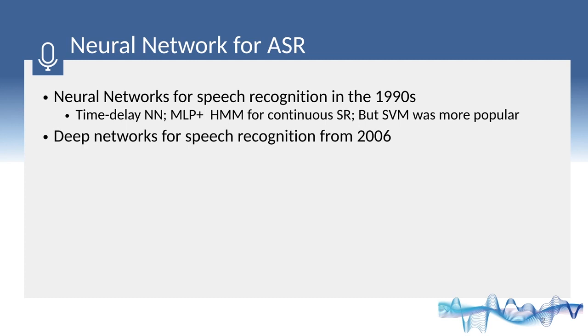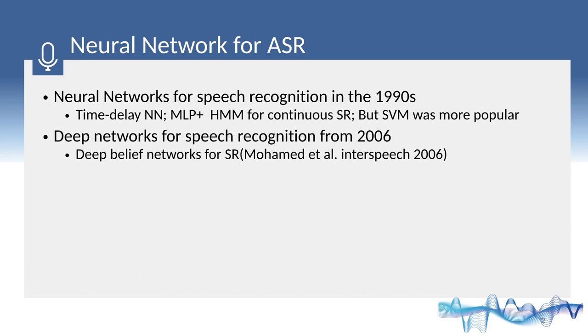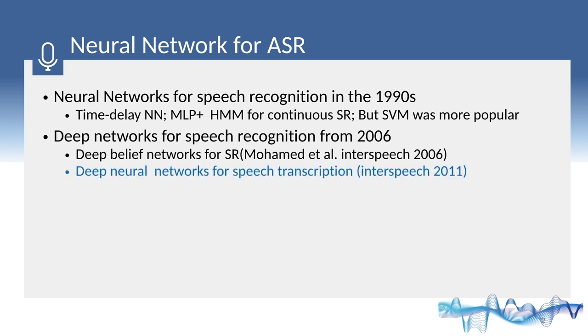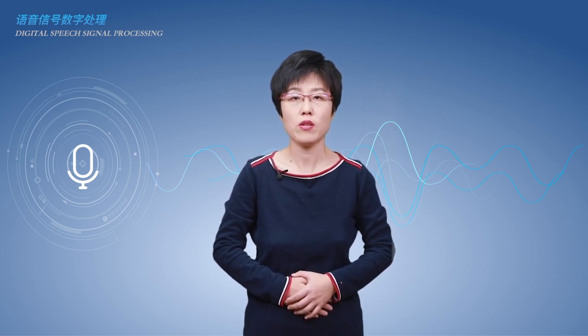Until 2006, the technique of deep belief networks was invented by Hinton and was successfully used in speech recognition with the scheme of DBN combined with HMM. Then Li and his co-workers extended this work and realized the scheme of DNN combined with HMM. Speech recognition entered the DNN era, and accuracy was significantly improved.